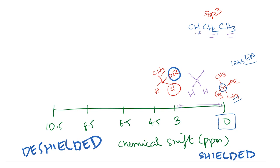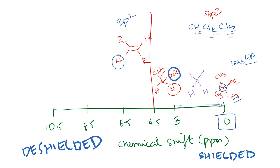Moving along, the next region is between 4.5 and approximately 6.5 ppm. This is the region where olefins typically show up — structures like RHC=CHR. These hydrogens attached to an SP2 carbon typically appear between 4.5 and 6.5 ppm, since SP2 carbons are more electronegative and pull electrons from the hydrogen, making it more deshielded.